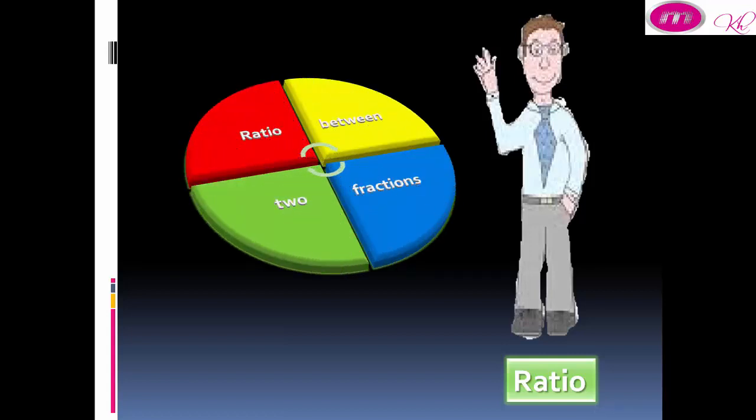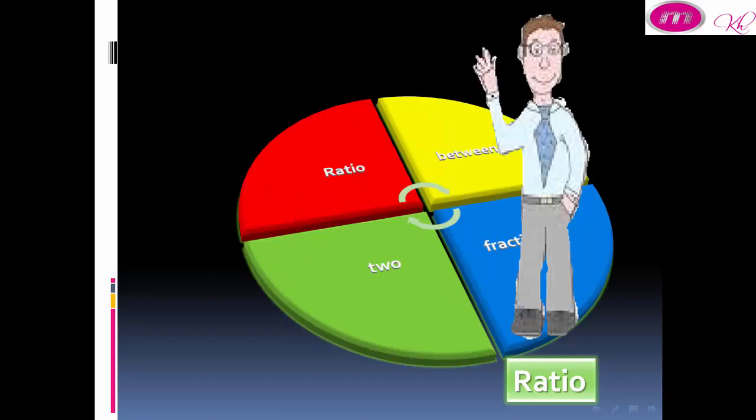The ratio between two fractions: Compare 6 over 25 and 3 over 5. We write the ratio like this.